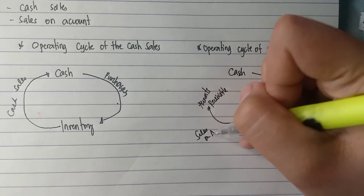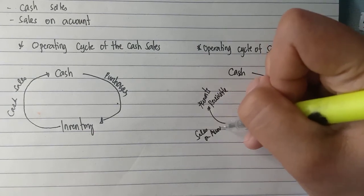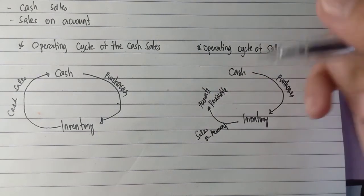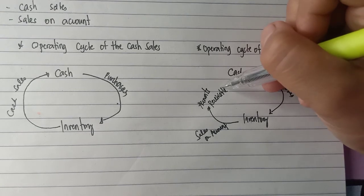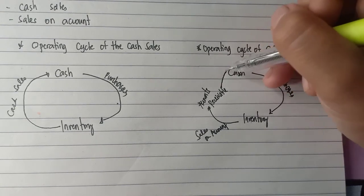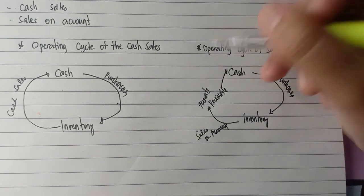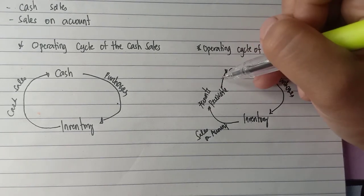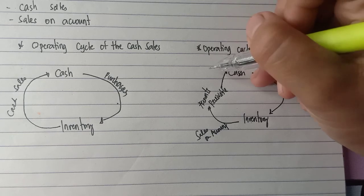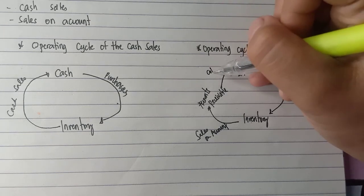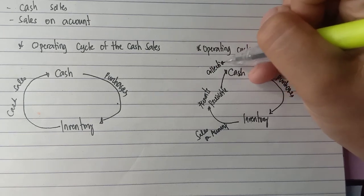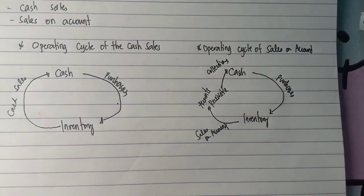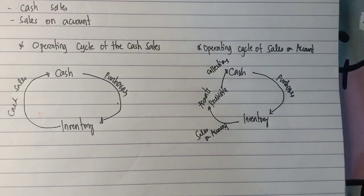This is sales on account. Then after that, the accounts receivable, once it is collected, will be converted back into cash.